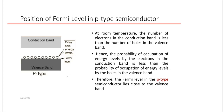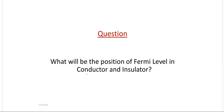For a p-type semiconductor, holes are the majority carriers and they reside in the valence band, so the Fermi level shifts towards the valence band. When acceptor-type impurity Na is added, the Fermi level shifts downward towards the valence band. A higher value of Na causes more downward shifting, and for very high Na the Fermi level nearly overlaps the valence band.